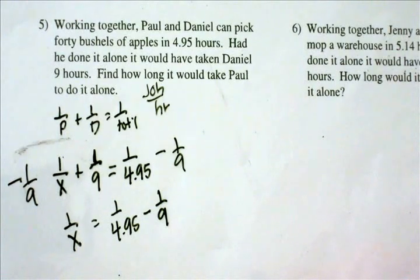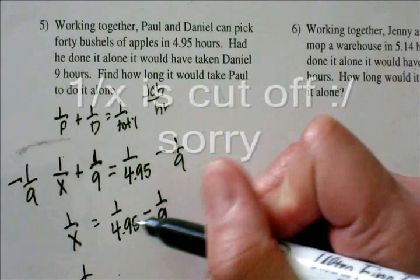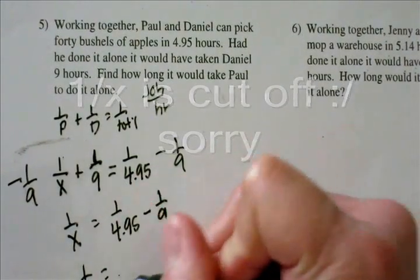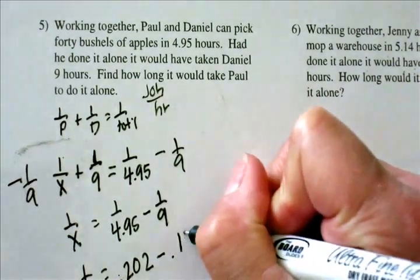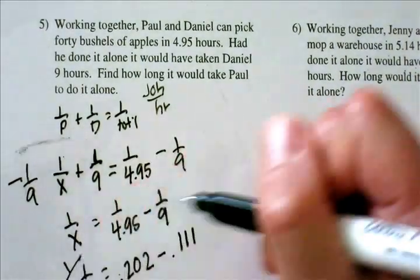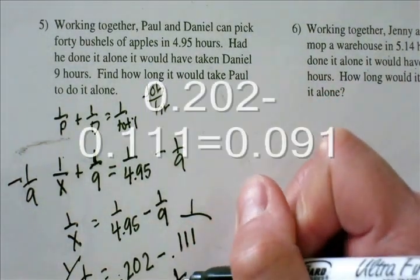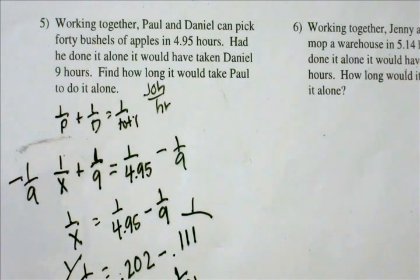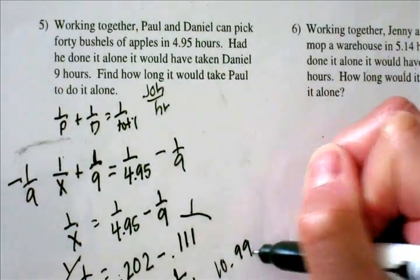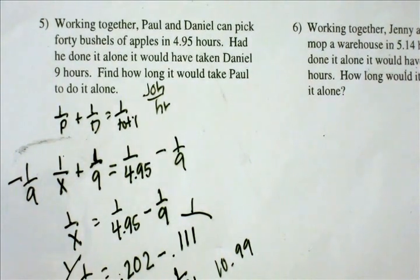I'll show you two different ways to solve this. The first: just compute the decimal values. Put 1 over 4.95 in your calculator to get 0.202, minus 0.1118, giving 0.091. Taking the inverse of that gives x equals 1 over 0.091, so x equals 10.98 hours. CUDA software calls the answer 11 hours — 10.98 is pretty close to 11.